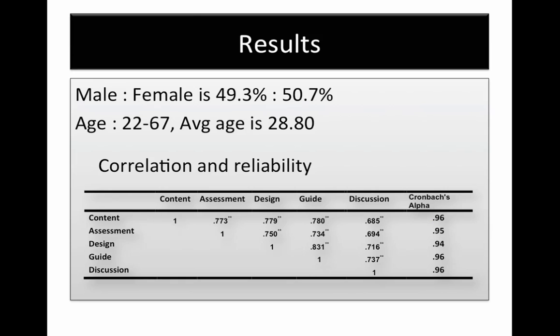The results are presented next. The demographics of the population of students are as follows: male to female ratio was about 50 to 50, and average age of the student population was 29. The results of the correlation analysis show that all correlation coefficients between the five factors were significant. The strongest correlation was found between design and guide. The weakest correlation was found between content and discussion, and overall the values were high, suggesting high correlation between the factors. Reliability of the five factors was determined by computing Cronbach's alpha, which was an average of 0.96, indicating a strong reliable measure.